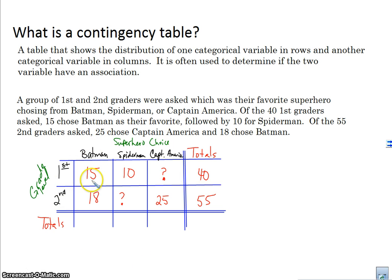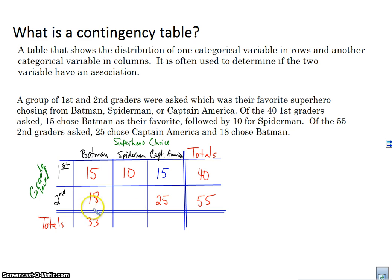Now I want to fill in all of the totals. The total for Batman is 33. For Captain America, first graders must have chosen 15, giving a total of 40. For Spider-Man, 10 first graders plus 7 second graders gives 17 total. And 40 students total chose Captain America. Our grand total of all first and second grade students was 95 students.